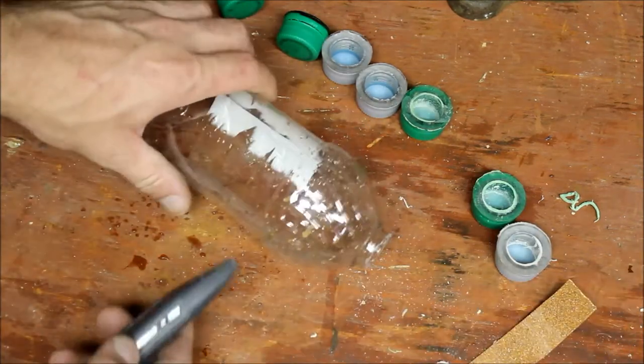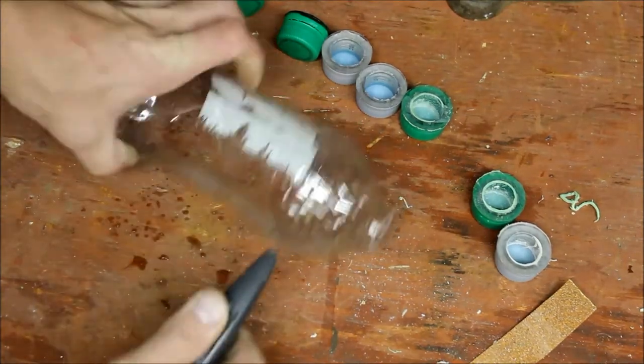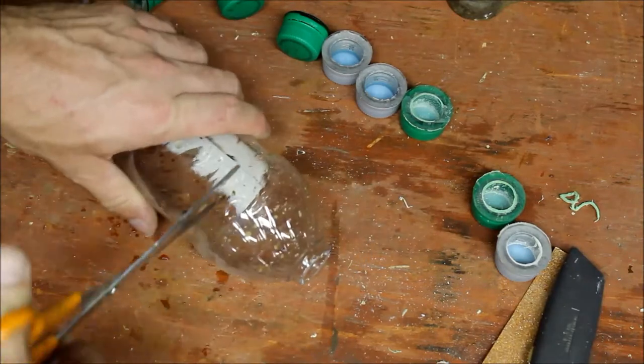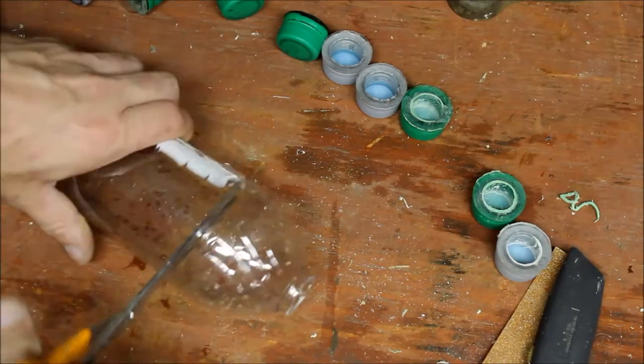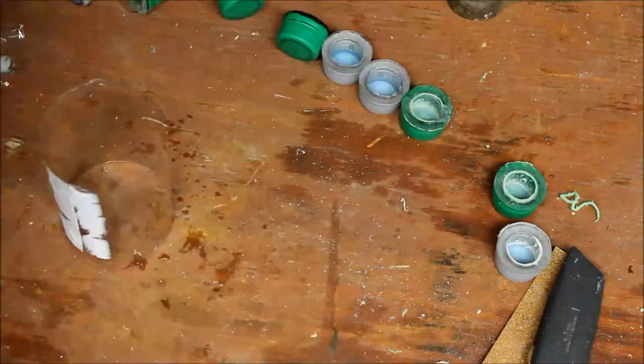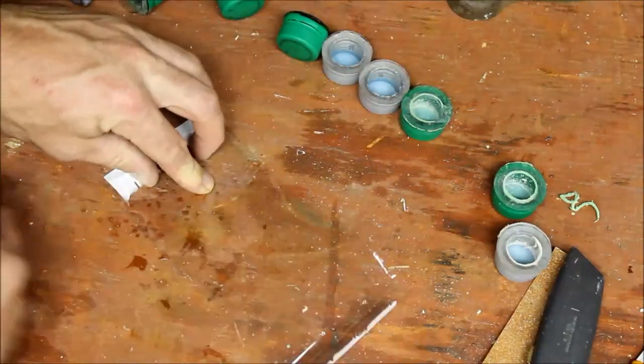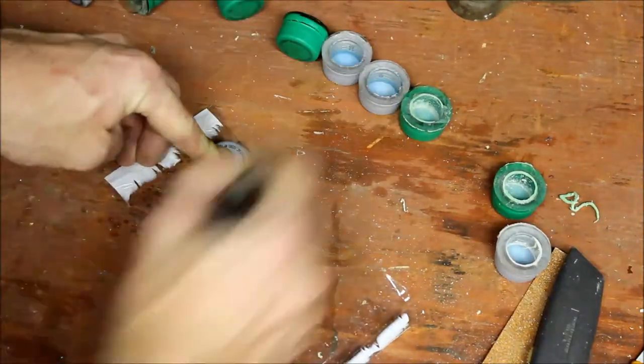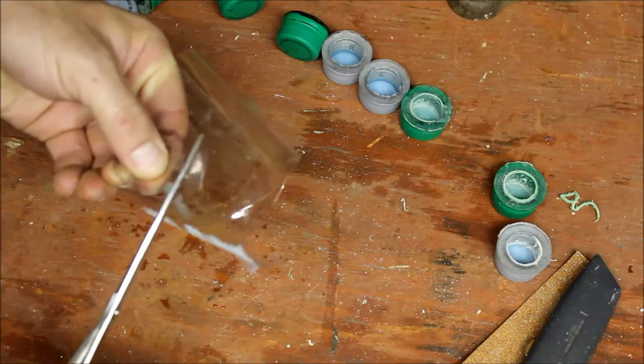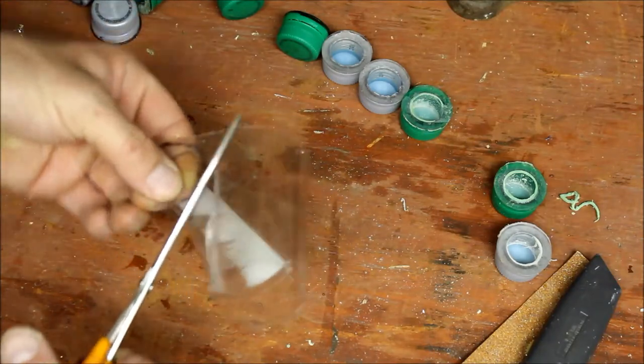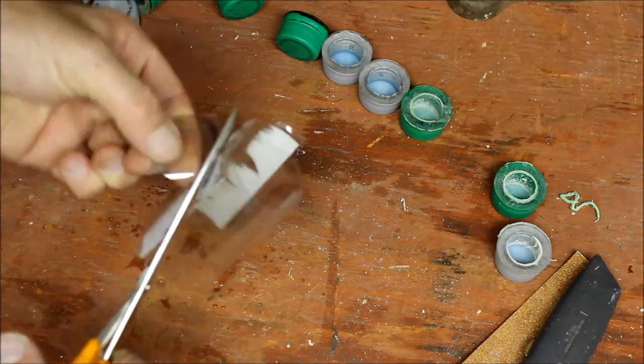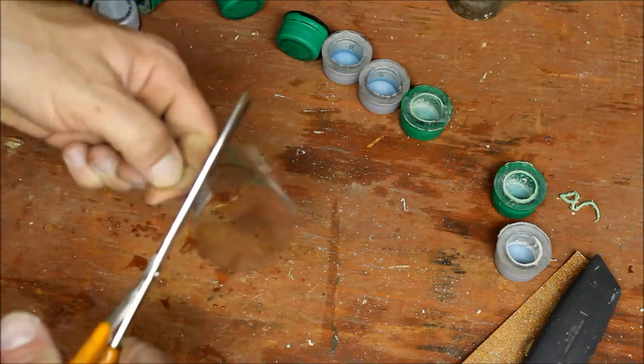Now the only other thing we are going to do is cut the middle of the bottle out just because I need a flat piece of plastic. I am going to cut it out a little rough right now. And after I glue it between the two bottle caps, I can always clean it up a little bit with my knife.